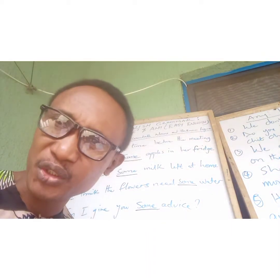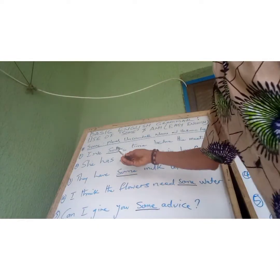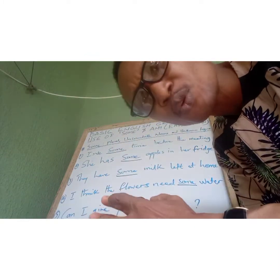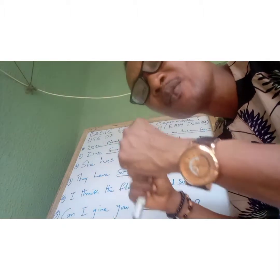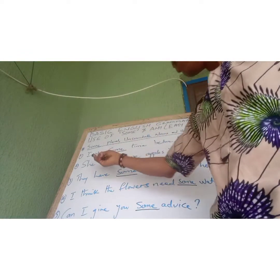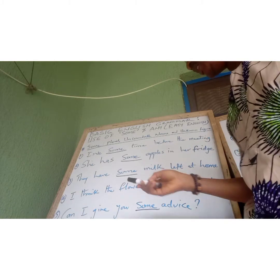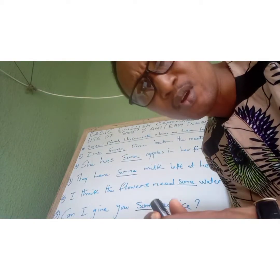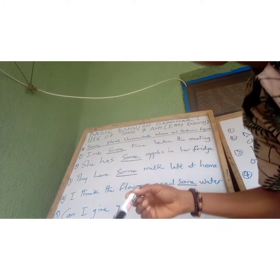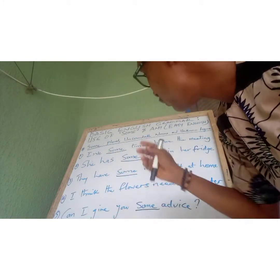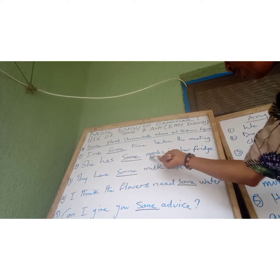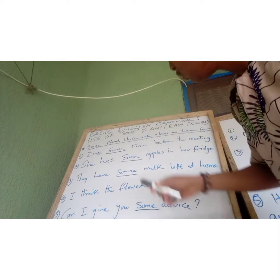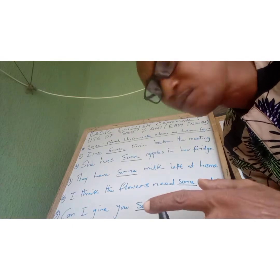The word 'some' is used with plural subjects, and it is also used when the identity of the subject or noun is not known. For example: 'I have some time before the meeting' — 'time' is an uncountable noun, so 'I have some time before the meeting' is the correct usage. Another example: 'She had some apples in her fridge' — 'apples' is a plural noun.